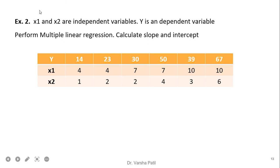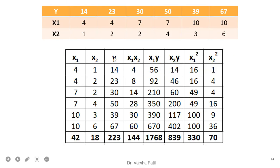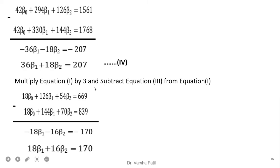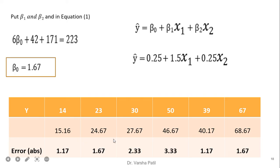The second problem also has independent variables x1 and x2 and dependent variable y. The first step is to create the table with columns for x1·x2, x1·y, x2·y, x1², and x2², then take their summations. Using the three normal equations and substituting all values gives a simultaneous equation system. Solving it yields: beta 2 = 9.5, beta 1 = 1, and beta 0 = 1.67. The predicted y and absolute error are then calculated easily.